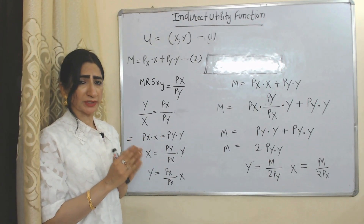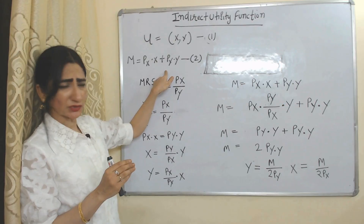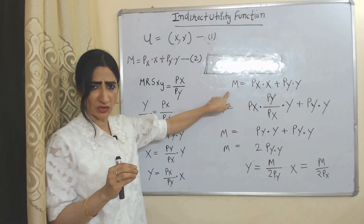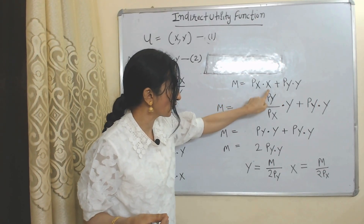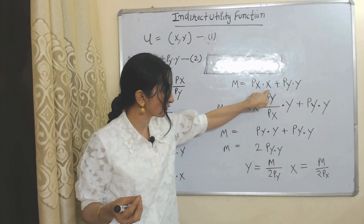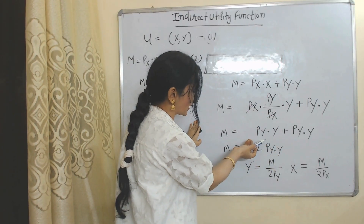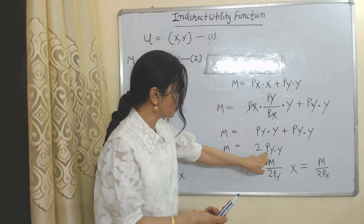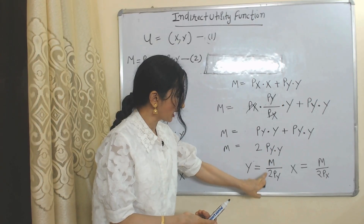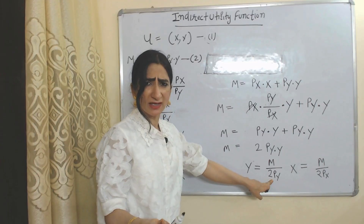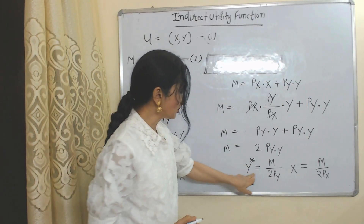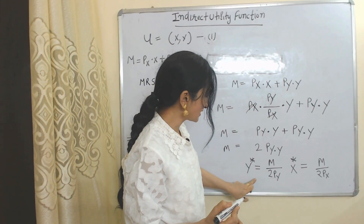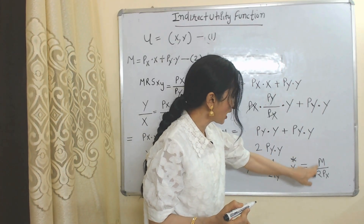Now one by one we will put the value of X and Y into the budget constraint equation. First, in place of X we substitute PY over PX into Y. PX cancels with each other, and the equation becomes M equal to 2PY into Y. So 2PY comes below, giving Y* equal to M over 2PY. Same way, we calculate X* by substituting the value of Y. Value of X* equals M over 2PX.